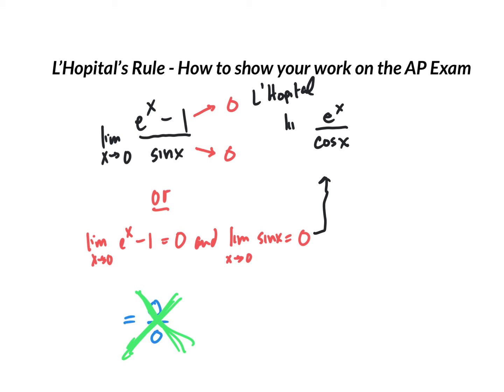And then you're going to evaluate the limit again. You must include that limit statement because you are saying, I've performed L'Hôpital's rule, and now I'm going to find the limit again. Well, e to the 0 is 1. Cosine of 0 is 1. So the final answer is 1. This would earn full credit on the AP exam.